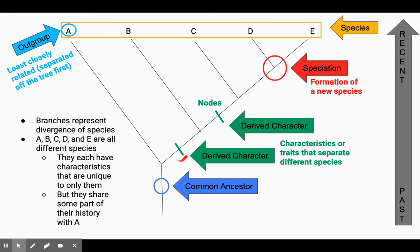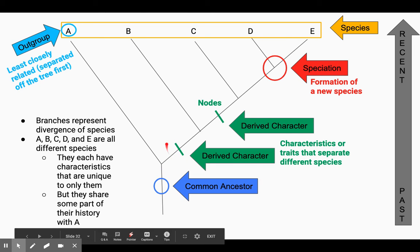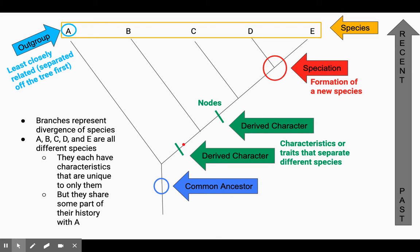Now, these nodes, I'm going to show you some examples, but these nodes are probably one of the most important things that you can understand about phylogenetic trees. Because let's say that this node is fur. So that means that at this point in our phylogenetic tree, fur developed, which means that letter A does not have fur. But letter B has fur.